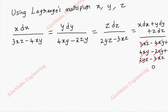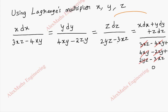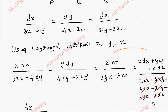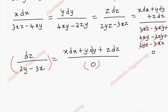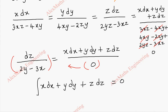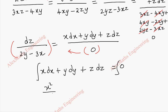Since the denominator is 0, we can take any two terms. Let's take the last two terms. The original term dz by (2y minus 3x) is set equal to (x dx plus y dy plus z dz) divided by 0. Cross-multiplying, the entire term becomes 0, leaving us with x dx plus y dy plus z dz equal to 0. On integration, this gives x squared by 2 plus y squared by 2 plus z squared by 2 equal to the integration constant c1.